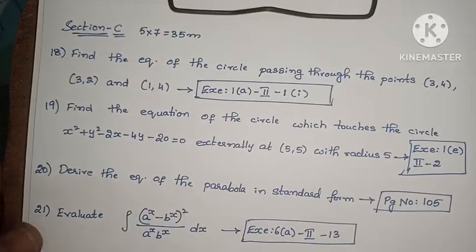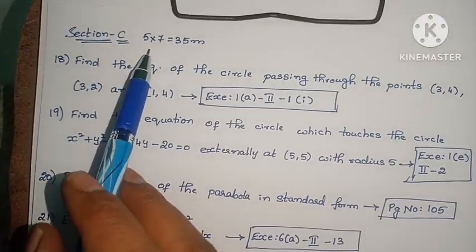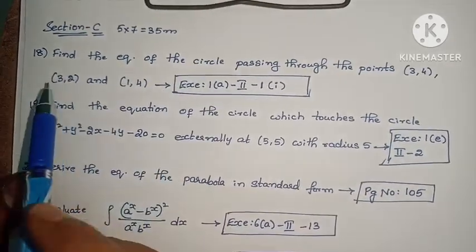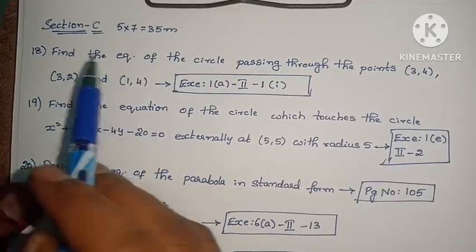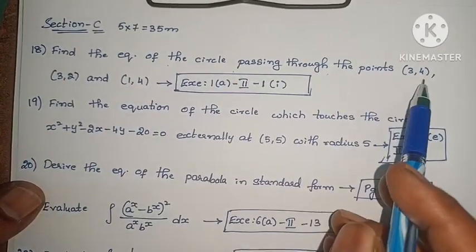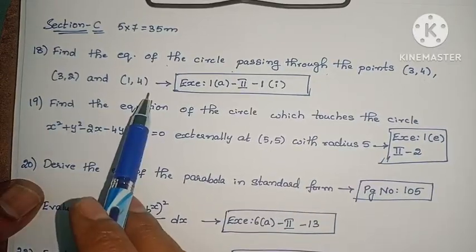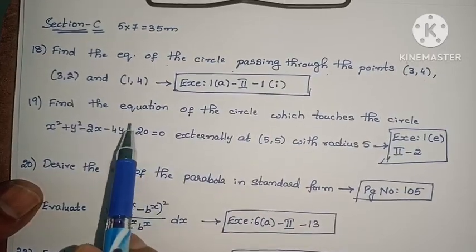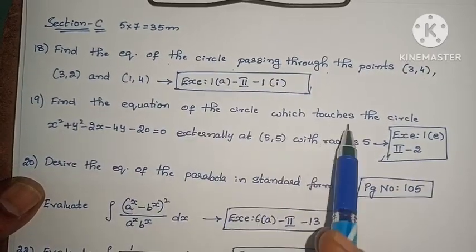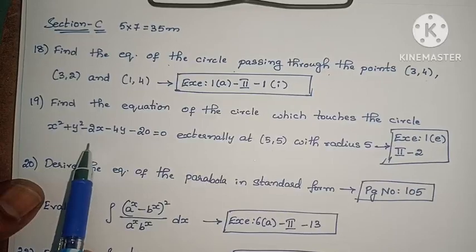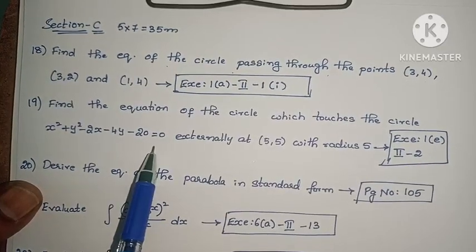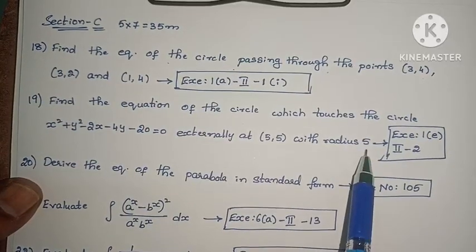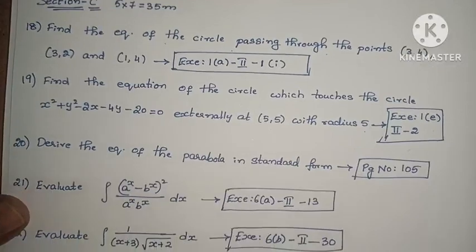Next, Section C. Here 7 problems are given, answer 5 problems, 7 marks each, so total 35 marks. 18th question: find the equation of the circle passing through the points (3, 4), (3, 2) and (1, 4). This is question 1, second exercise, third problem. Next: find the equation of the circle which touches the circle x² + y² - 2x - 4y - 20 = 0 externally at (5, 5) with radius 5. This is question 1, second exercise, third problem.